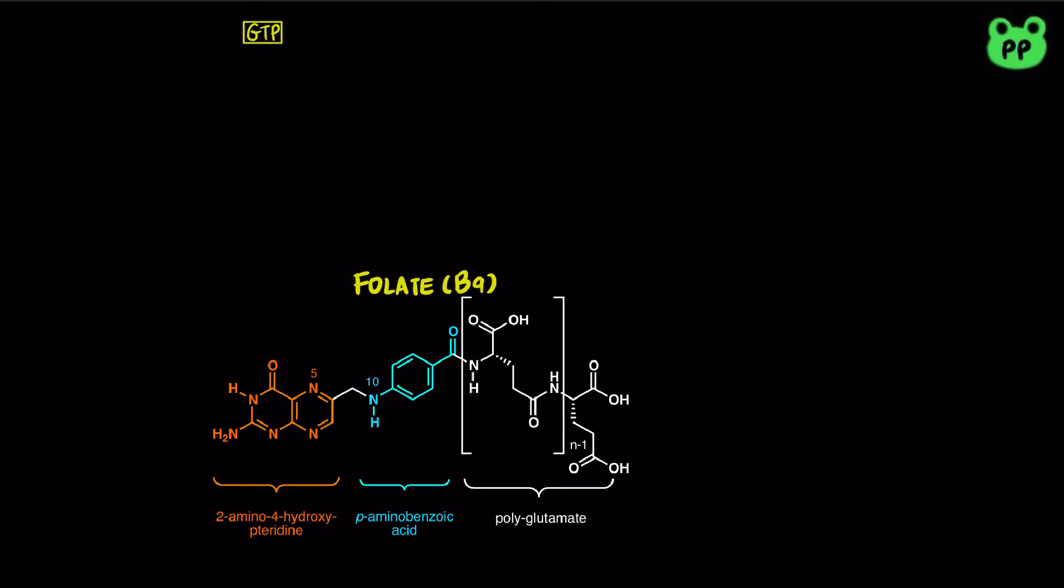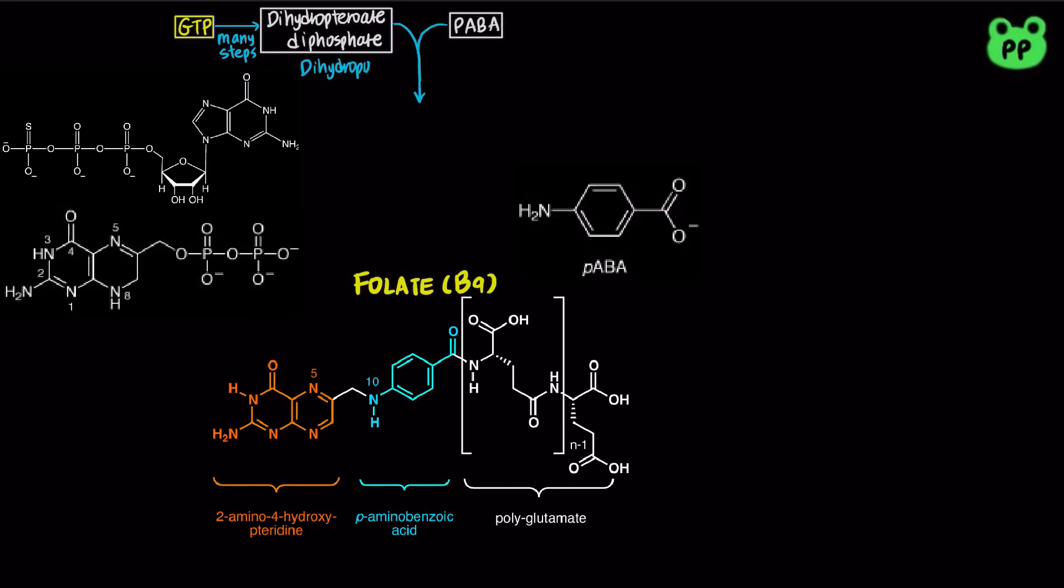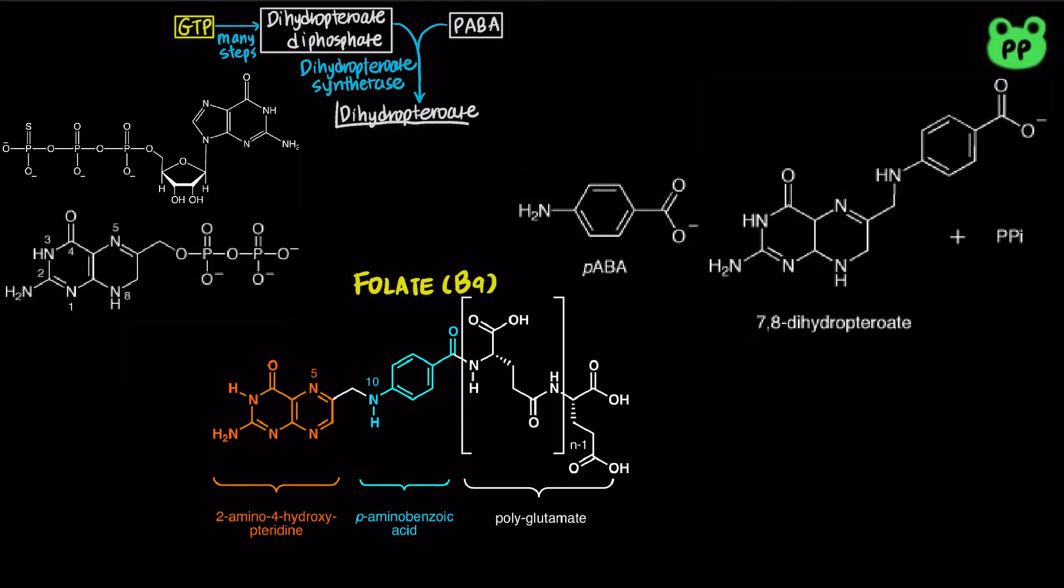Folate can be synthesized by bacteria from GTP, which is converted to dihydropteroate diphosphate in many steps. Dihydropteroate synthetase then condenses dihydropteroate diphosphate with PABA, which stands for para-aminobenzoic acid, to form dihydropteroate.